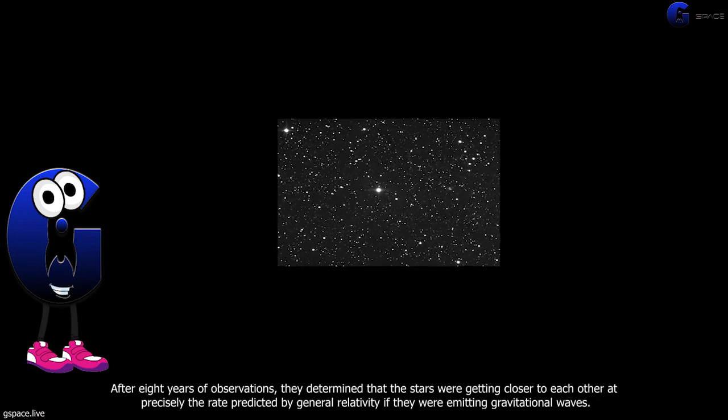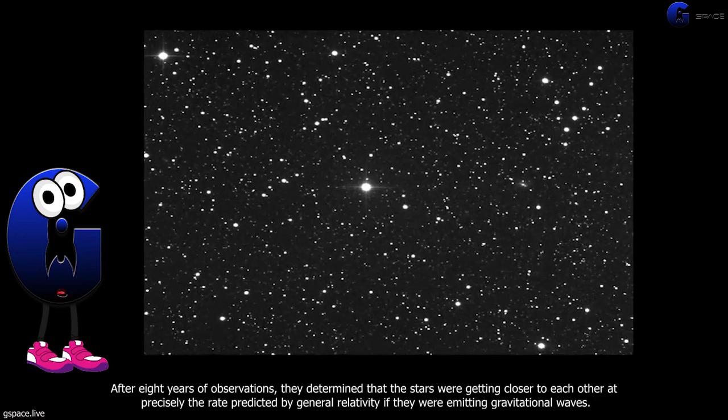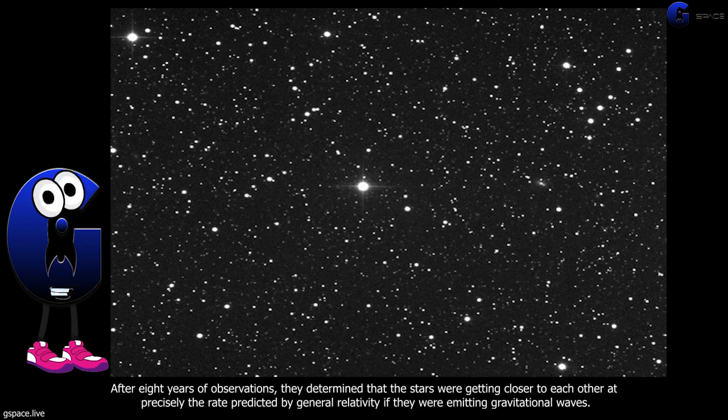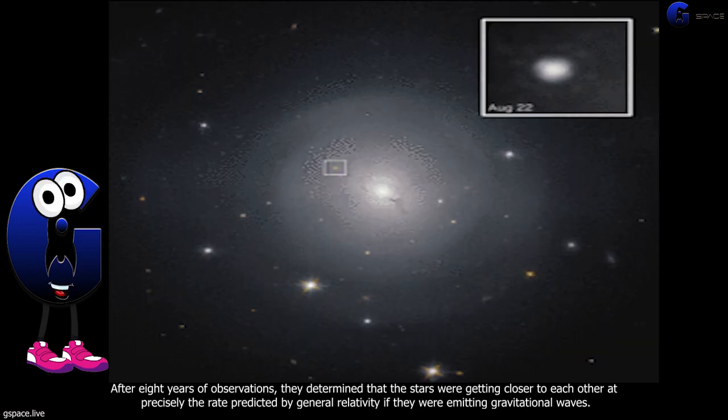After eight years of observations, they determined that the stars were getting closer to each other at precisely the rate predicted by general relativity. Since then, many astronomers have studied pulsar radio emissions and found similar effects, further confirming the existence of gravitational waves.